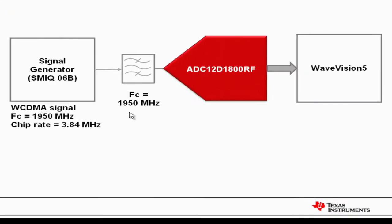So the block diagram that we're going to look at is, first of all, the signal generator is generating a WCDMA signal, which is centered at 1950 MHz. This signal has a chip rate of 3.84 MHz. That's followed by a bandpass filter, which is centered at 1950 MHz. And this is designed just to cut out the higher order harmonics from the input signal.